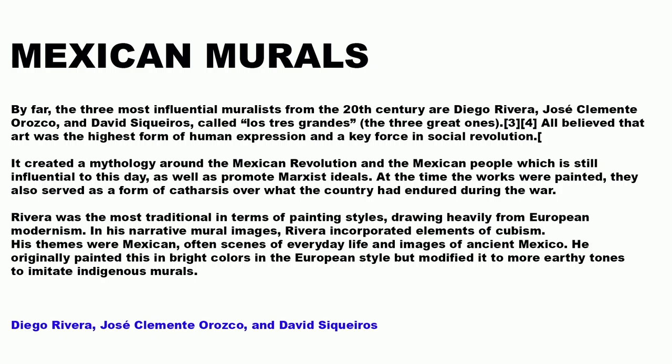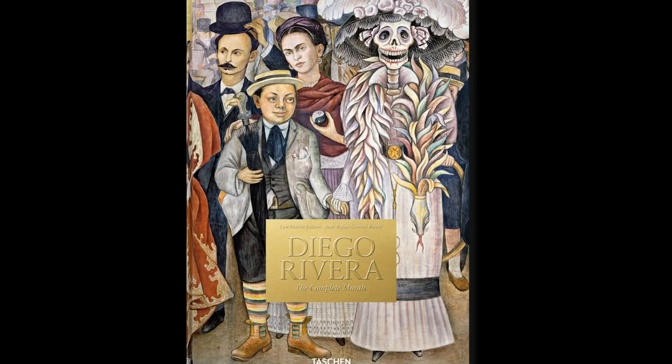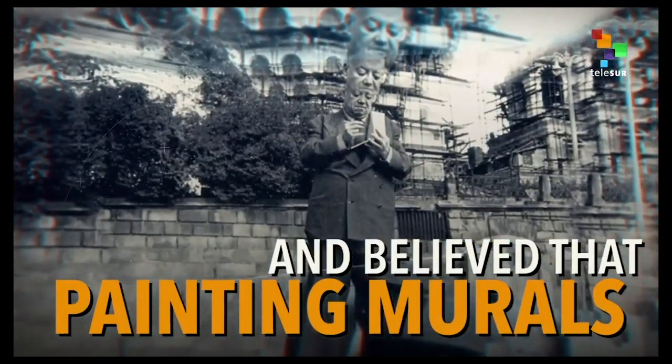In Mexico, the Mexican muralists — by far the three most influential from the 20th century — are Diego Rivera, José Clemente Orozco, and David Siqueiros, called Los Tres Grandes, the three great ones. All believed that art was the highest form of human expression and a key force in social revolution. They created a mythology around the Mexican revolution and the Mexican people, promoting Marxist ideals, and their works served as catharsis over what the country had endured during the war. Rivera was the most traditional in terms of painting styles, drawing heavily from European modernism and incorporating elements of Cubism, though he modified his palette to more earthy tones.